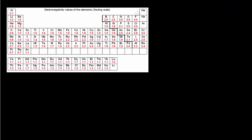Here is the Pauling electronegativity scale. As I mentioned, fluorine has a value of 4.0. Generally, as we go across a row of the periodic table, electronegativity values go up, and as we go down a column, they generally go down. Non-metals at the upper right tend to have the highest electronegativities, and metals at the lower left tend to have the lowest.